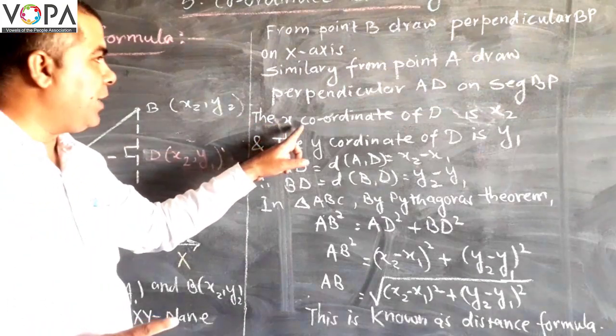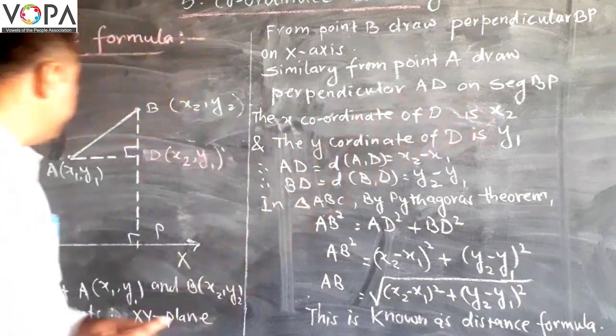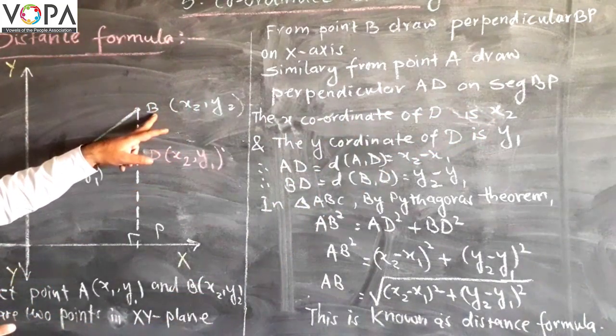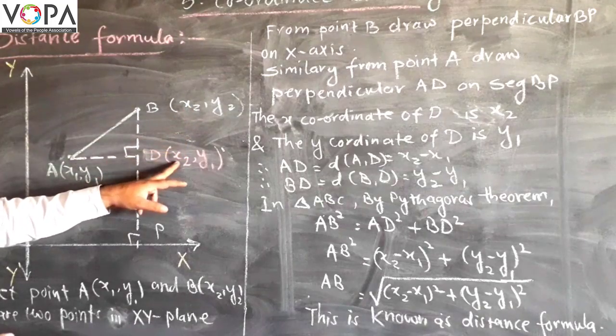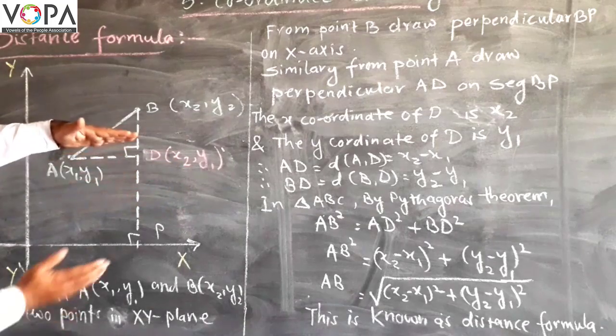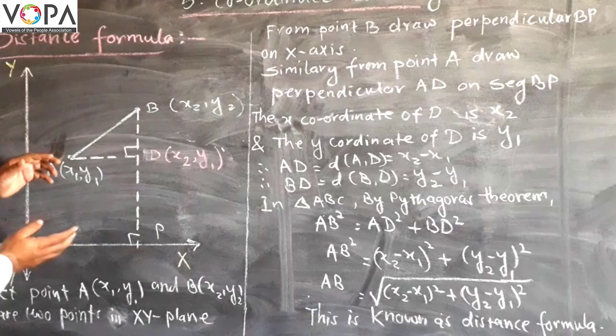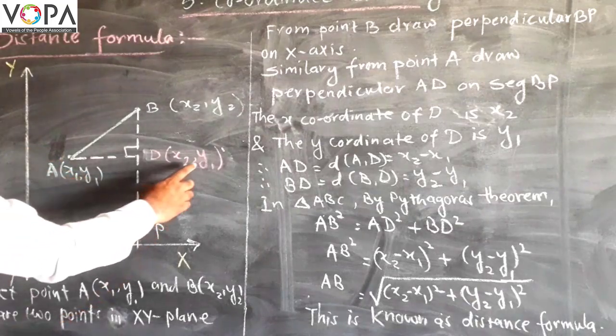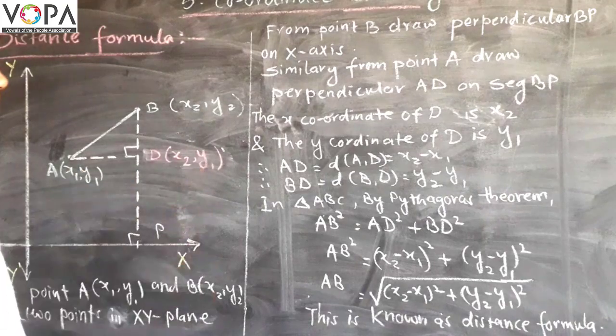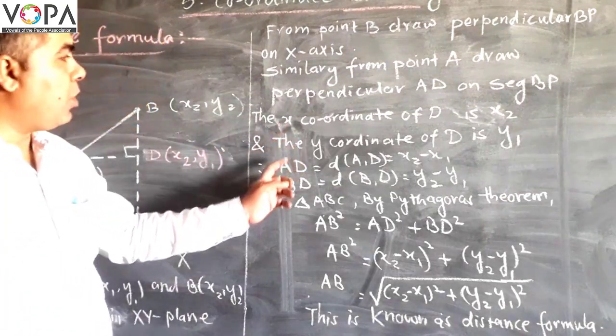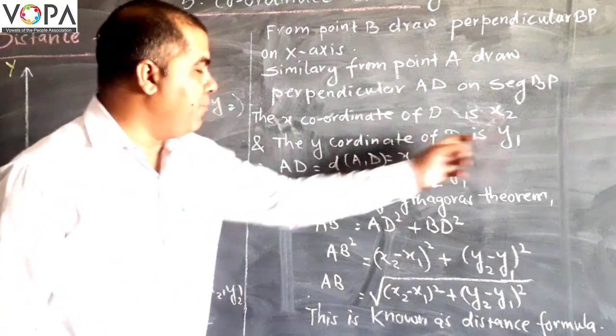As the coordinate of B is (x2, y2), similarly the coordinate of D will be (x2, y1). AD is parallel to the x-axis, therefore its y coordinate will be the same, that is y1. Now the coordinates of D are (x2, y1).